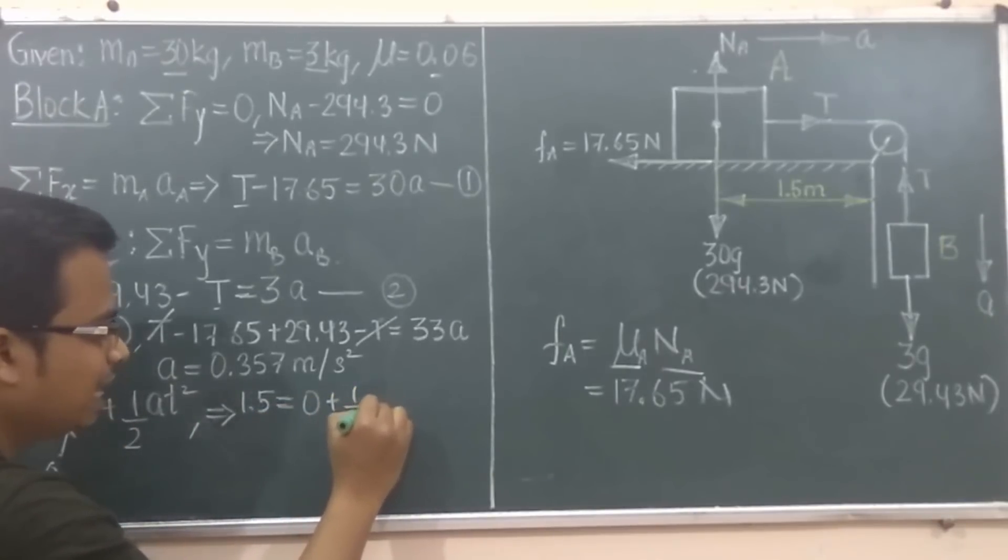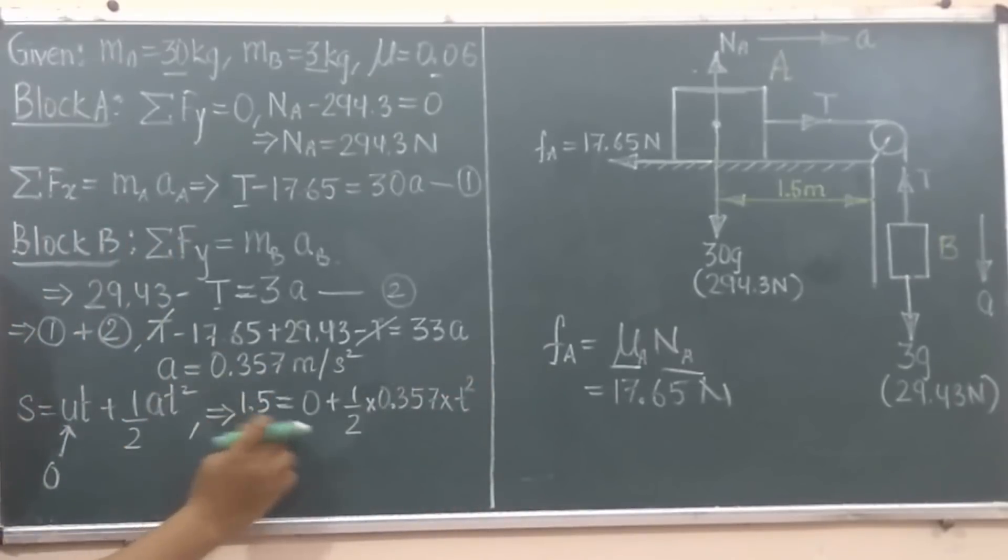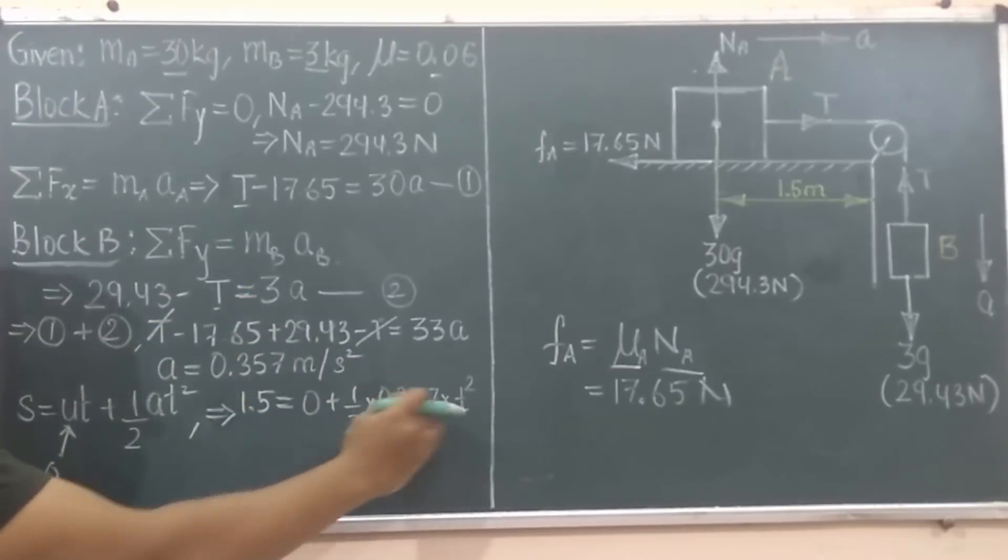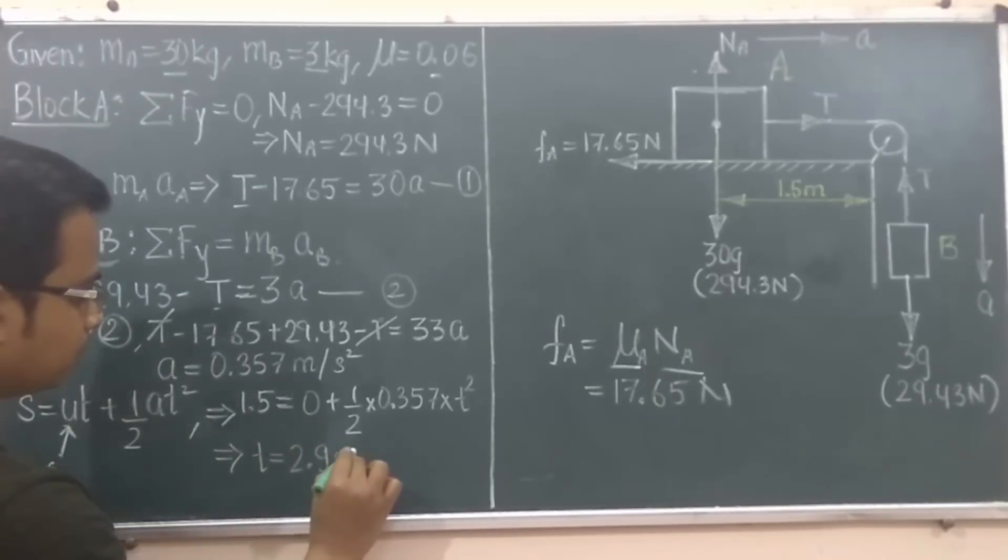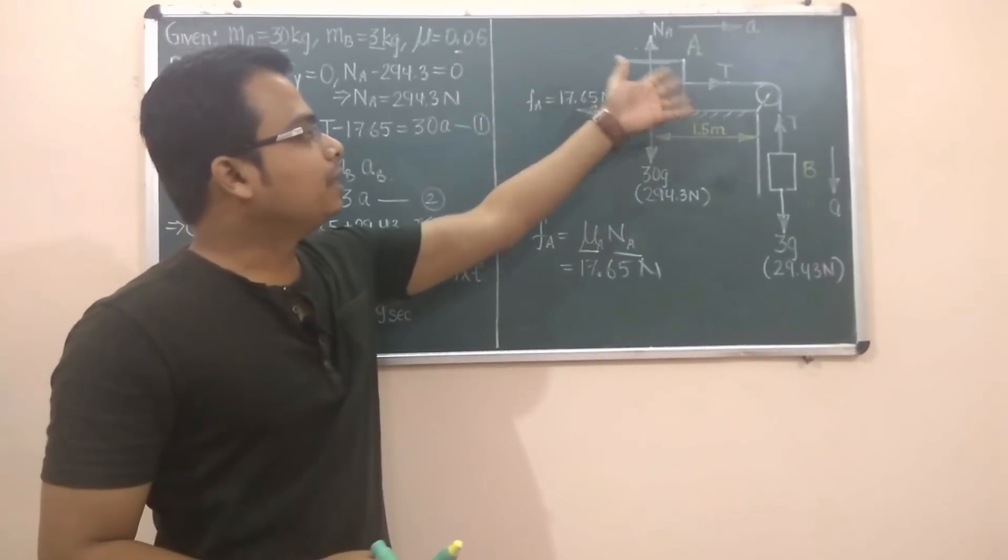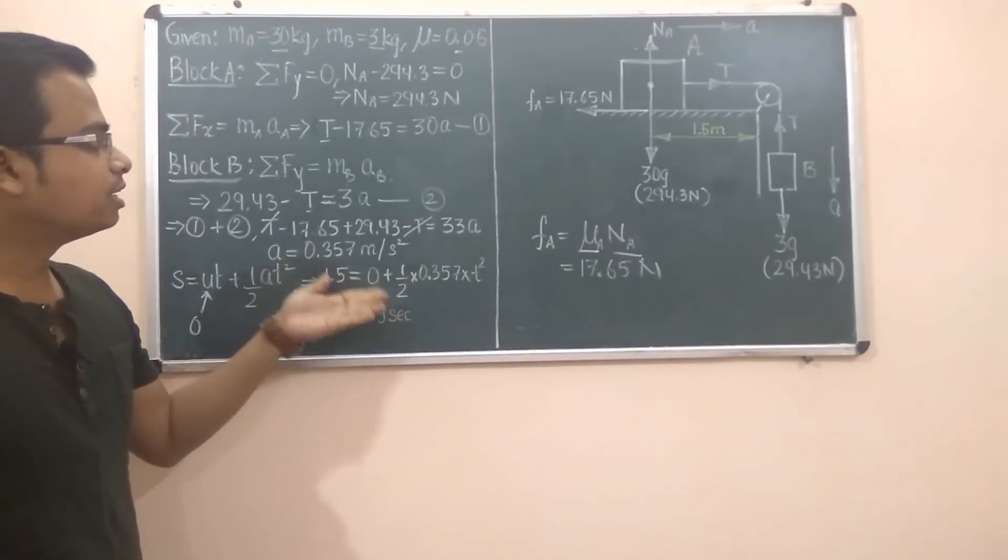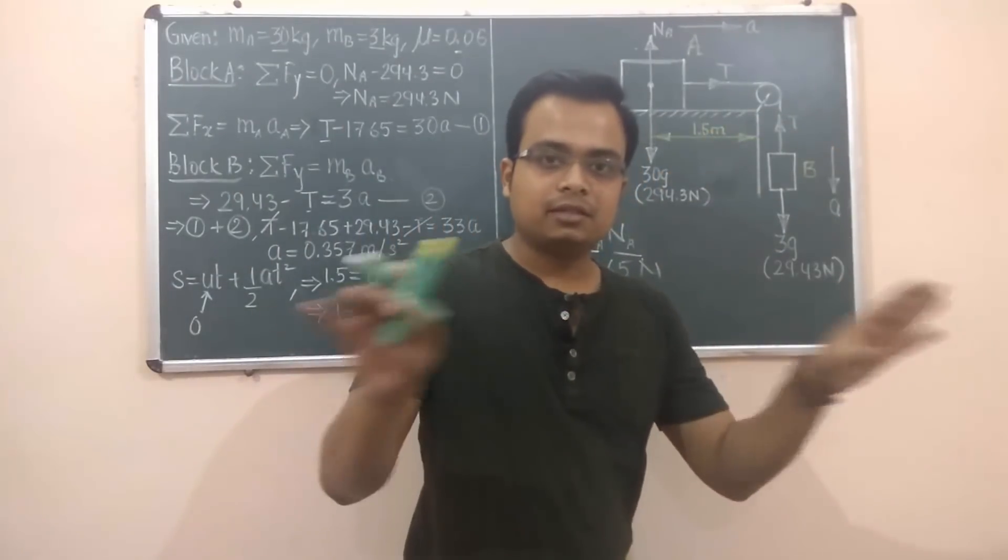...plus half of a, that's 0.357 times t squared. So this is pretty simple: 1.5 times 2 divided by 0.357, whatever the product is, it has to be square rooted since this is t squared, and the final value for t obtained is going to be equal to 2.9 seconds. So this block over here is traveling in the right-hand side direction with an acceleration of 0.357 meters per second squared, and after 2.9 seconds this is going to fall over. That's it, done and dusted.